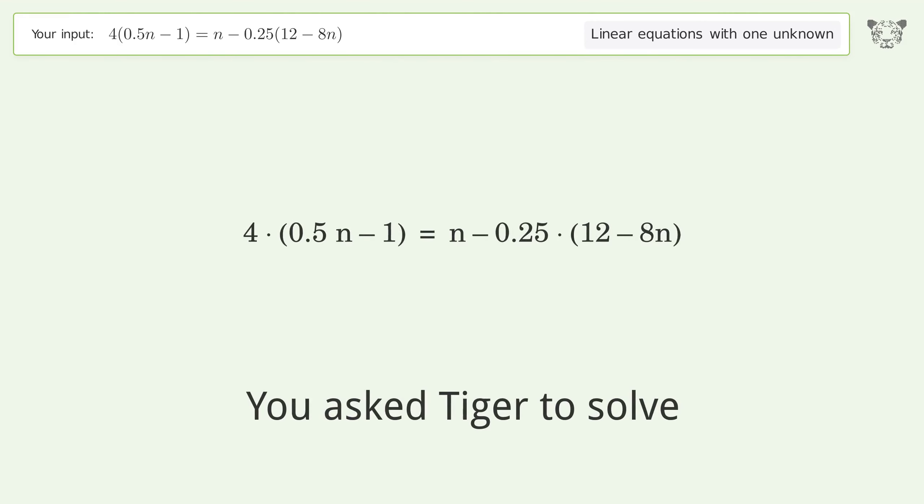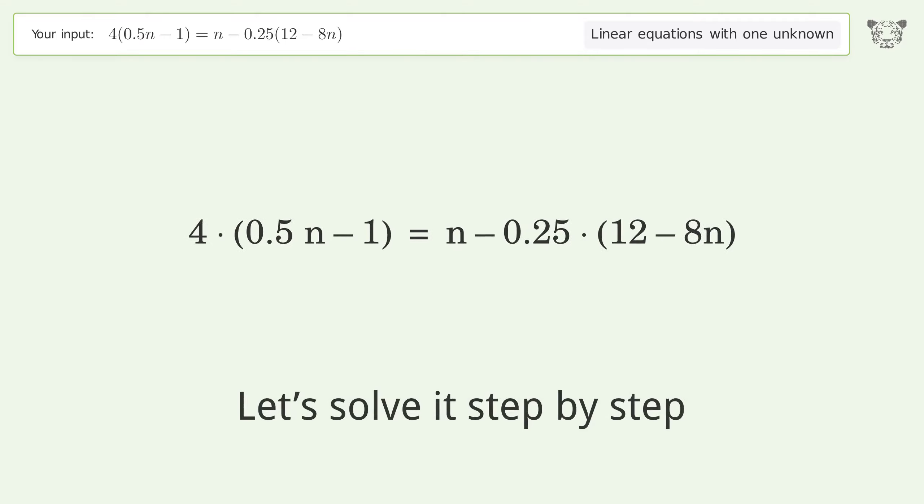You ask Tiger to solve this, which deals with linear equations with one unknown. The final result is n equals negative one. Let's solve it step by step, simplify the expression.